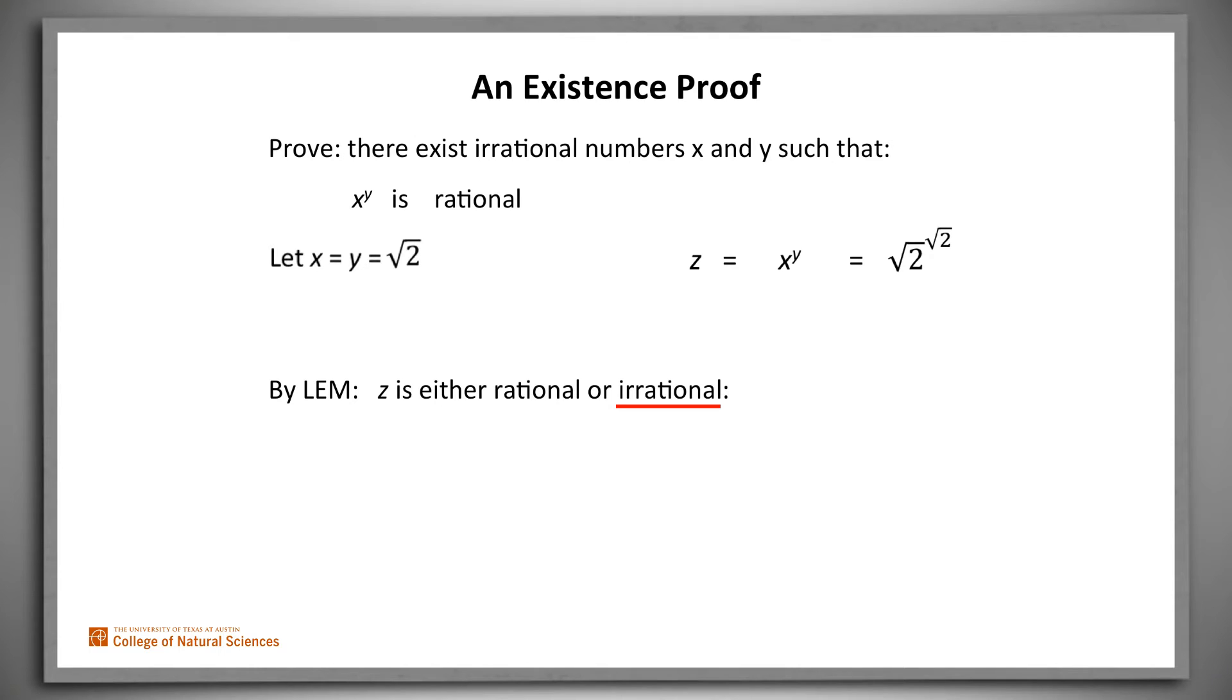If it's not rational, then we have another irrational number, namely z, the square root of 2 to the square root of 2 that we can use. So let's consider z to the y, which is simply this. We can do a bit of algebra and see that it's just 2, which is rational.